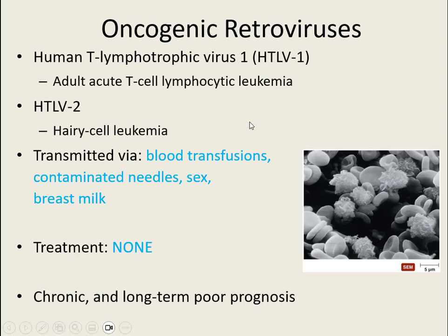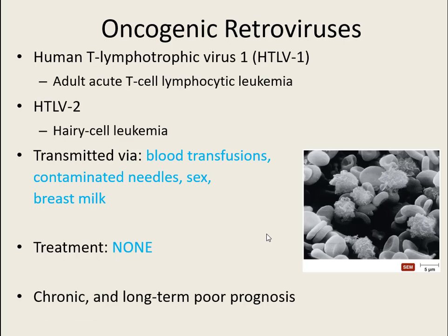Human T-lymphotropic virus 2 is a similar virus that changes the cell shape so they appear to have extensions, giving them the nickname 'hairy cell leukemia.' As these cells reproduce so quickly with nothing telling them to stop, they can no longer do their job. This virus is transmitted through contaminated blood transfusions, contaminated needles, sex, and breast milk.